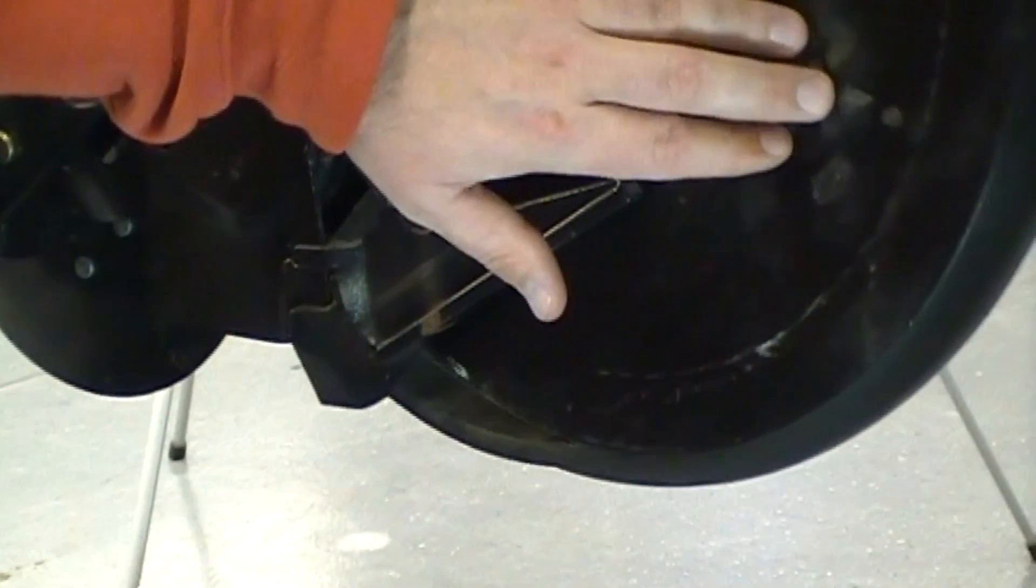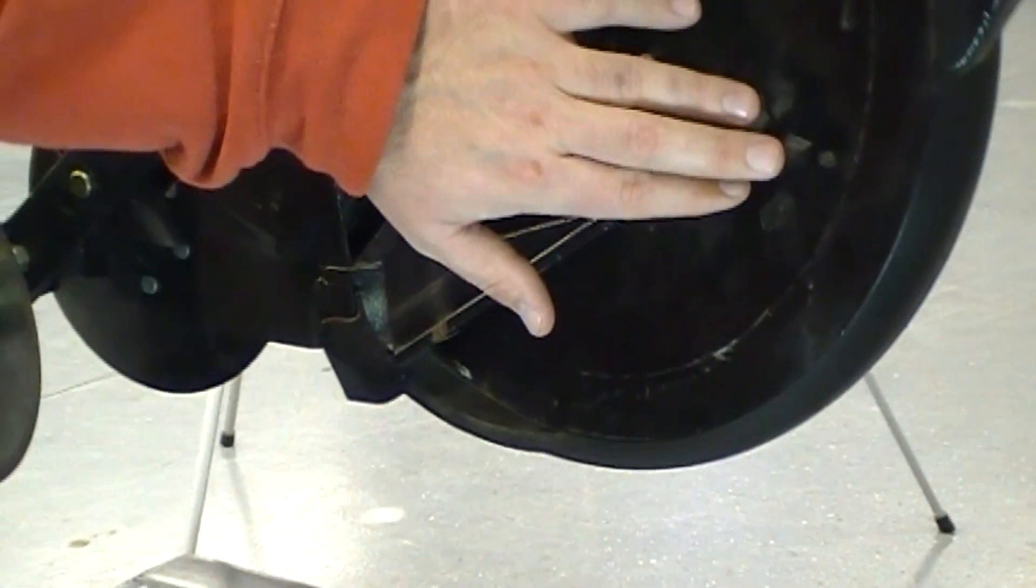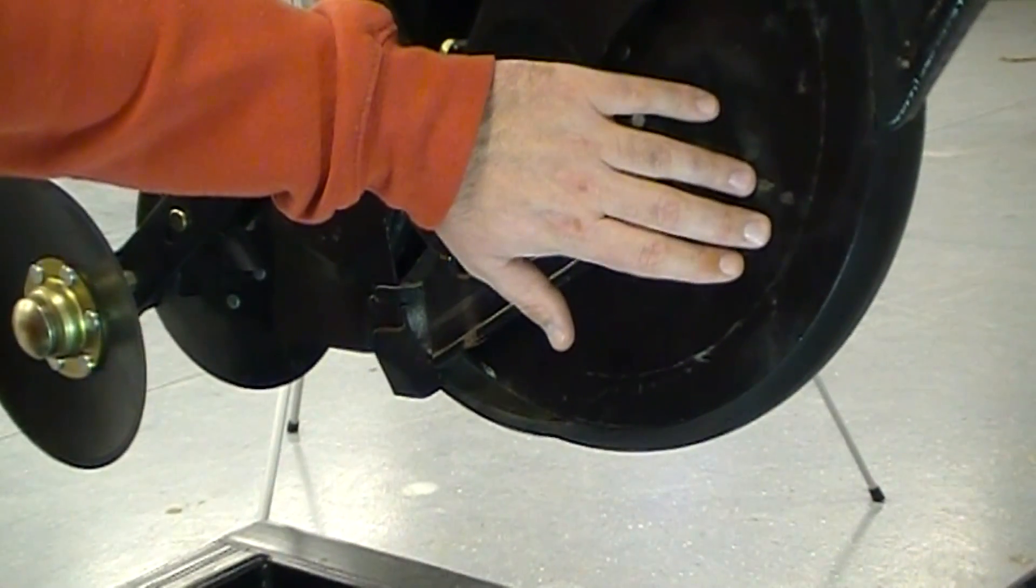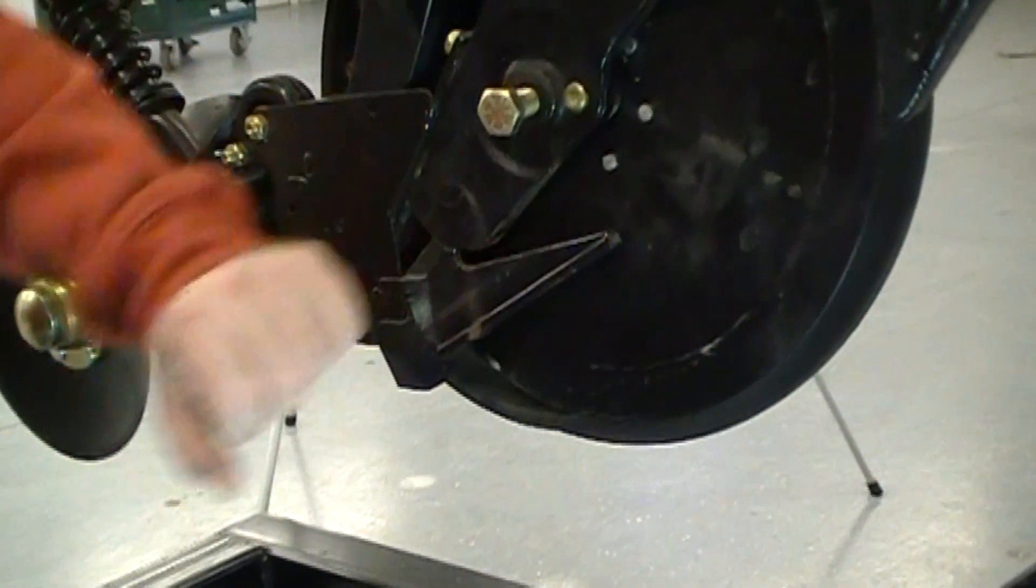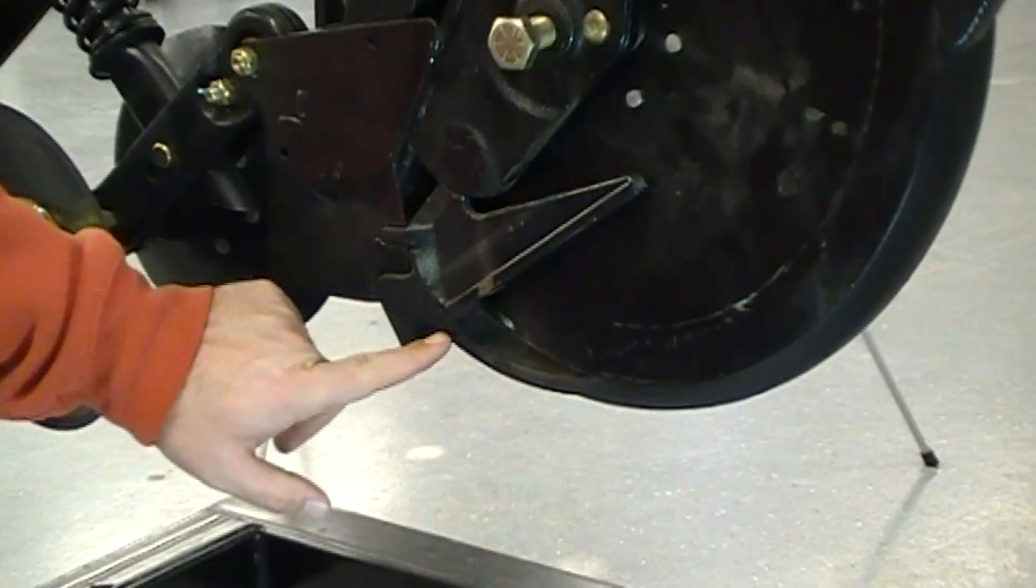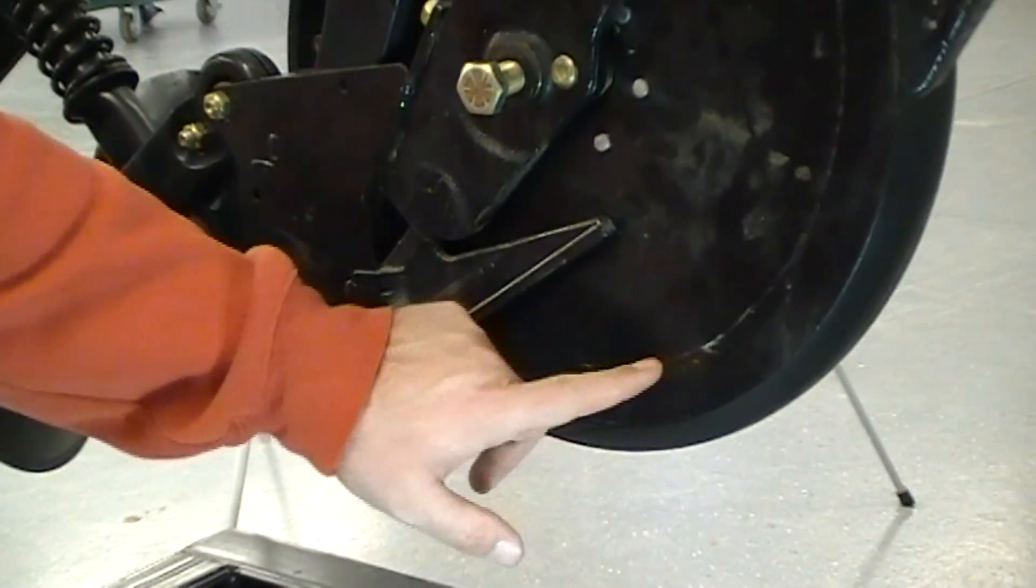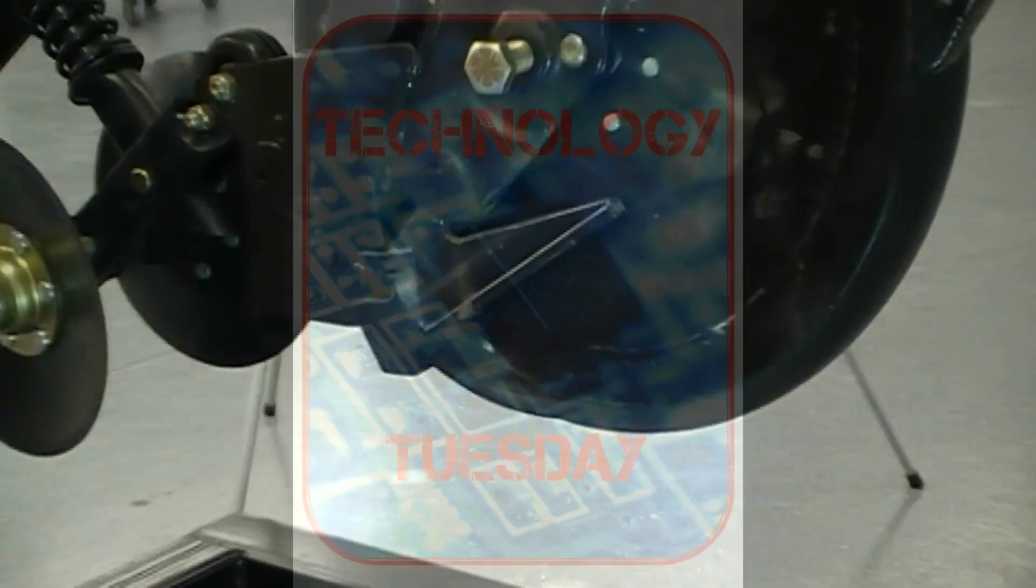So when we set our Case disc openers, we want them just to contact or have a gap no larger than the width of three business cards. So again, we don't want them too tight together, but we're going to rely on this firming point in the bottom of the seed trench to form our true V. We're not worried about the W bottom coming off the disc opener itself.